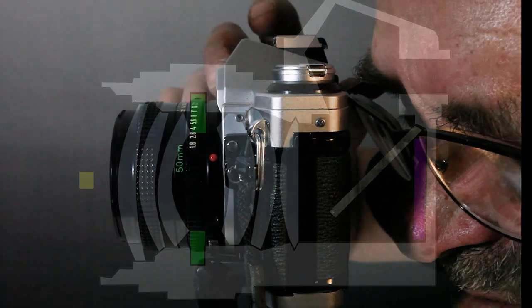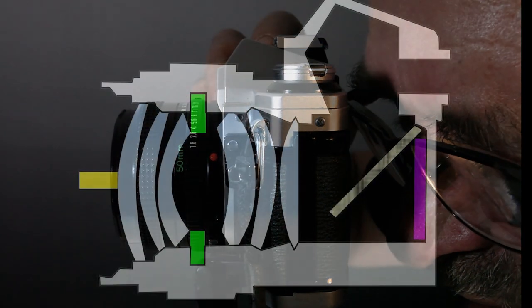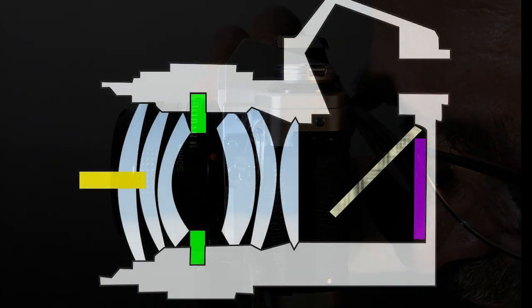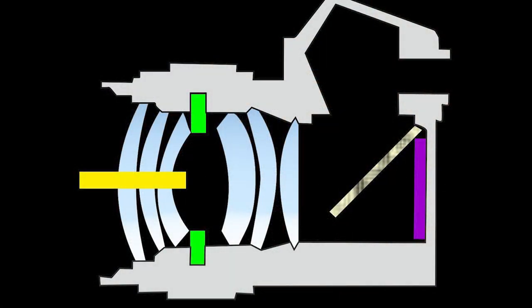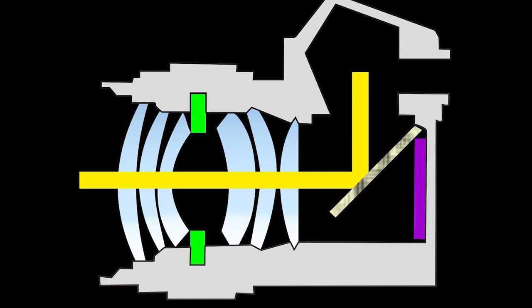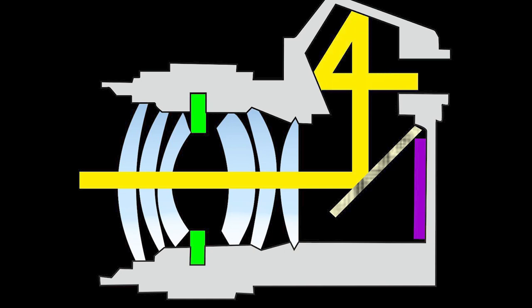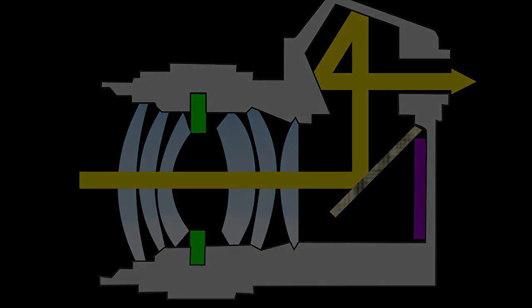We look through the viewfinder. The light goes through the lens. The aperture is wide open to focus. It reflects off the mirror, which is at an angle of 45 degrees, continues up and refracts into the pentaprism. And so we observe through the camera.